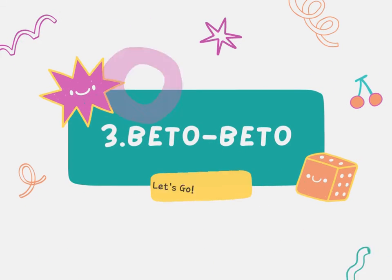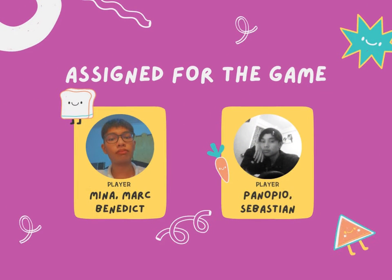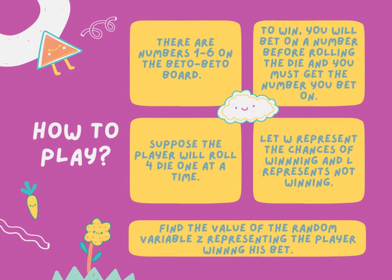The third game is beto-beto. Here's how you can play it. There are numbers 1 to 6 on the beto-beto board. To win, you will bet on a number before rolling the die, and you must get the number you bet on.